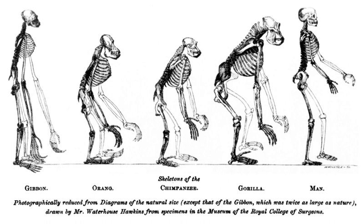Both rooted and unrooted phylogenetic trees can be either bifurcating or multifurcating, and either labeled or unlabeled. A rooted bifurcating tree has exactly two descendants arising from each interior node, and an unrooted bifurcating tree takes the form of a free tree with exactly three neighbors at each internal node. A rooted multifurcating tree may have more than two children at some nodes. A labeled tree has specific values assigned to its leaves, while an unlabeled tree—sometimes called a tree shape—defines a topology only. There are always more multifurcating than bifurcating trees, more labeled than unlabeled trees, and more rooted than unrooted trees.